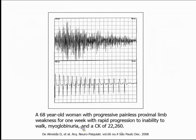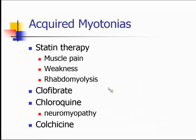In the remaining time, I want to talk about disorders that can mimic myotonic disorders. A case: a 68-year-old woman presents with progressive painless proximal limb weakness for one week with rapid progression, inability to walk, myoglobinuria, and CK over 22,000. EMG showed myotonic discharges — waxing and waning waveforms. These are acquired myotonias: medications that cause myotonic discharges in addition to weakness, but no clinical myotonia. The prototypical category is statins, which cause muscle pain and weakness in a small percentage of patients, sometimes with rhabdomyolysis. Other cholesterol-lowering agents — particularly clofibrate — and drugs in the chloroquine family used by rheumatologists and dermatologists can also do this. Colchicine, the anti-gout medicine, can also affect the muscle and cause prominent myotonic discharges on needle EMG.